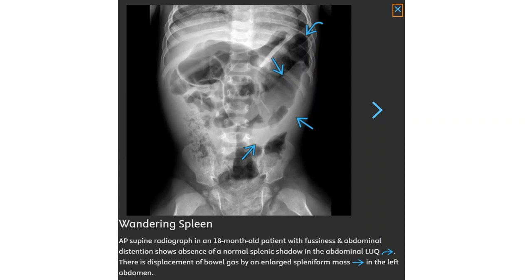This is an AP radiograph in an 18-month-old patient with abdominal distension, showing absence of the normal splenic shadow in the left upper quadrant. This is displaced by an enlarged splenic-form mass in the left abdomen.